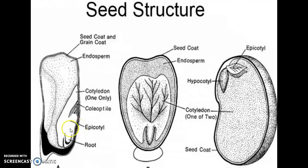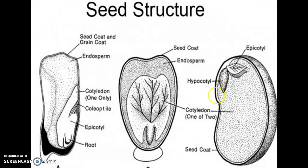The epicotyl is the region from which the shoot arises, or it is the part of the embryonic axis between the plumule and the cotyledonary node. In hypogeal germination, the epicotyl elongates so that the cotyledons remain in the soil, and the terminal end of the epicotyl is the plumule. The hypocotyl is the part of the embryonic axis between the cotyledonary node and the radicle. In epigeal germination, the hypocotyl elongates so that the cotyledons come out of the soil, and the terminal end of the hypocotyl is the radicle.